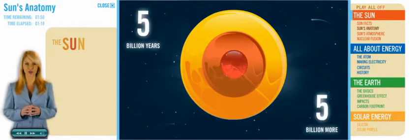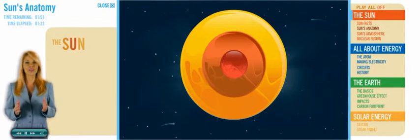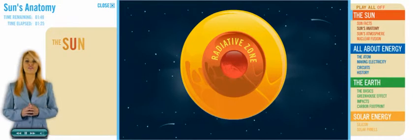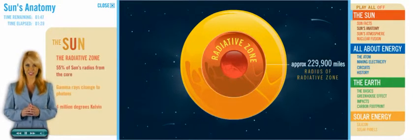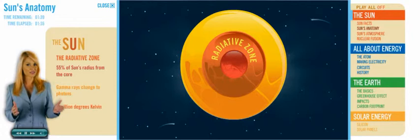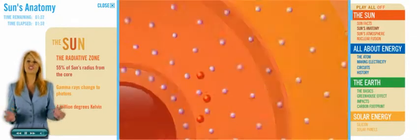Moving out from the core, we find the radiative zone, where the Sun transfers its energy out into space. This zone is about 55% of the Sun's radius from the core. The energy made in the core is in the form of gamma rays when it first begins its move outward. In the radiative zone, this energy is changed into photons.